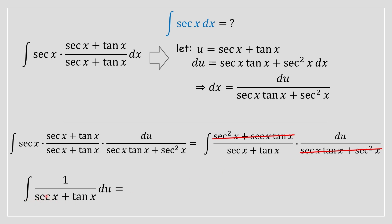What you have is the integral of 1 divided by sec x plus tan x du. This is a u term, as we said before. Therefore, we can replace this with u, and you have the integral of 1 divided by u du.